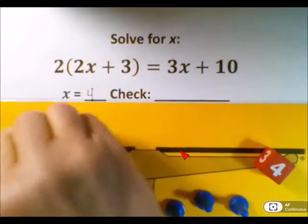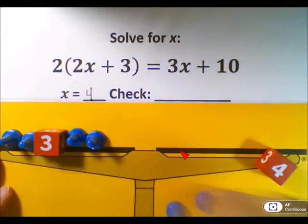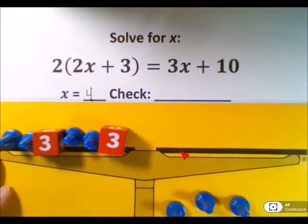So we need to set up 2x's plus 3 two times. This time I'll put it next to them. And on the other side, I need 3x's plus 10.